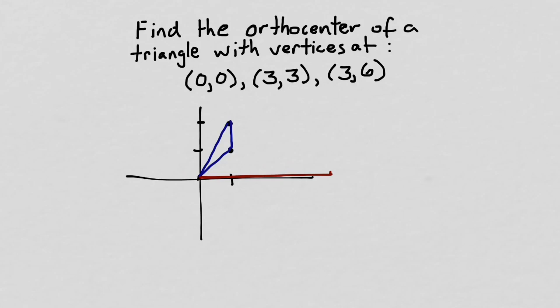To find a second altitude, we could choose either of these two vertices. Let's go with this one at 3, 3. So I want to create a line from this vertex that's perpendicular to the opposite side. To do that, the easiest way is to find the slope of this side.